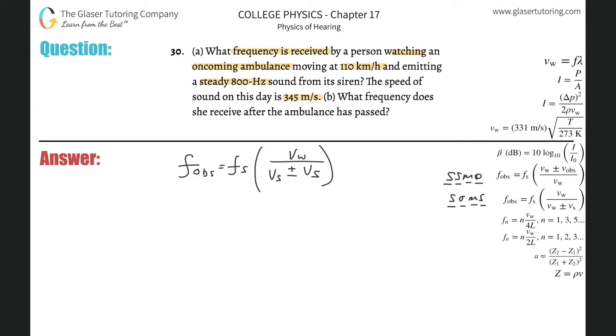Frequency that the observer experiences will equal the frequency that the source produces multiplied now by the velocity of the sound, normal sound in that environment, divided by the velocity of the sound wave plus or minus now the velocity of the source. And obviously if this is a moving source, this velocity down here is V sub S for source. And then if you're dealing with SMO where the observer is now moving, then the addition and subtraction is the velocity of the observer.